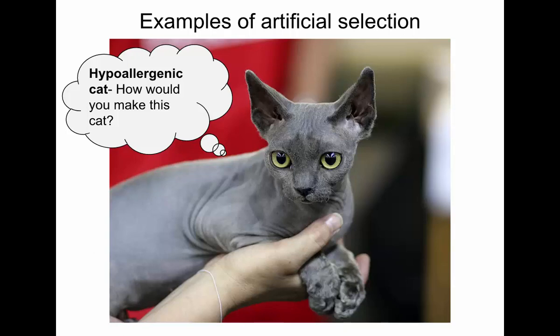Say you have a litter of kittens — you're going to select the one with the least amount of hair. From another litter, same thing. You take the cats with the least amount of hair and breed them together. When they have kittens, take the one with the least amount of hair and breed it with another with the least amount of hair. If you repeat this many, many times, eventually it results in hairless cats. Now, it's not natural selection — it's what we call artificial selection. Humans are choosing which ones get to mate, and over time that results in changes in the species.